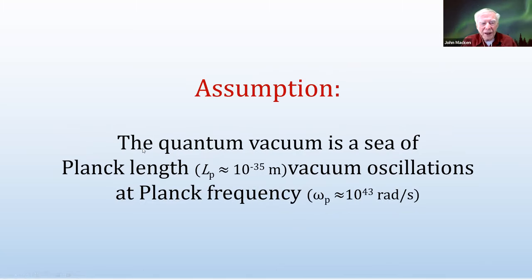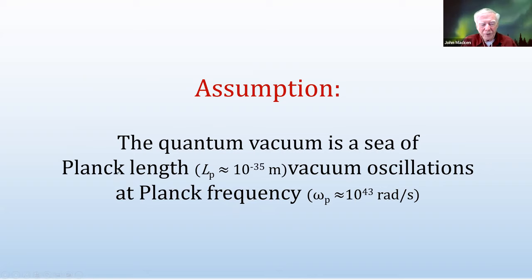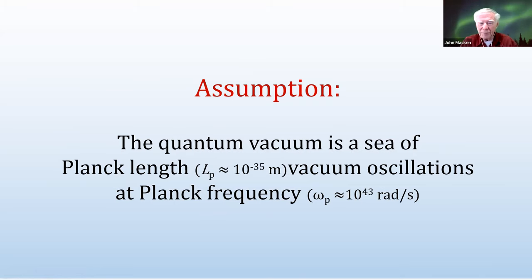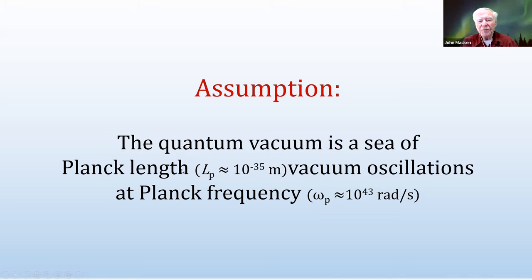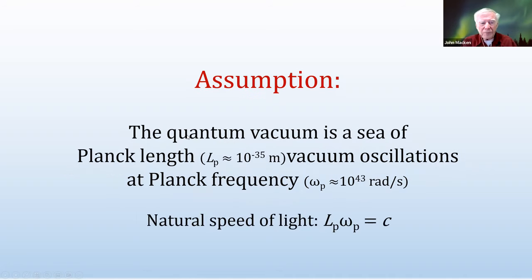My basic assumption is that the quantum vacuum is a sea of Planck-length vacuum oscillations at Planck frequency. I've slightly modified Wheeler — he had all frequencies up to Planck frequency, but I say it's fundamentally at Planck frequency. Lower frequencies arise by averaging over a volume of space, where many oscillating fluctuations produce a slight variation yielding lower effective frequencies. This assumption is needed to achieve vacuum zero-point energy and the uncertainty principle.